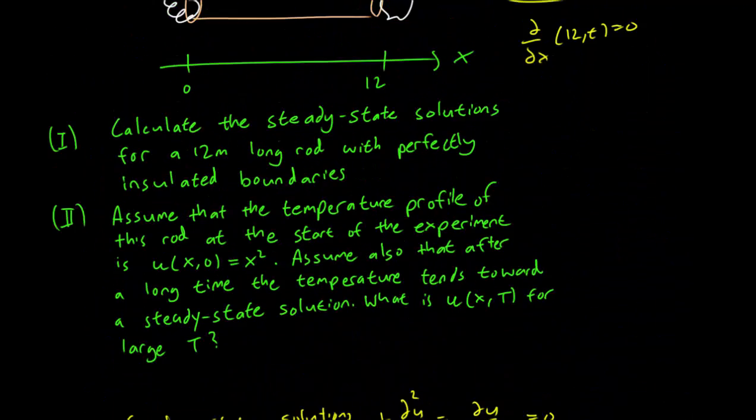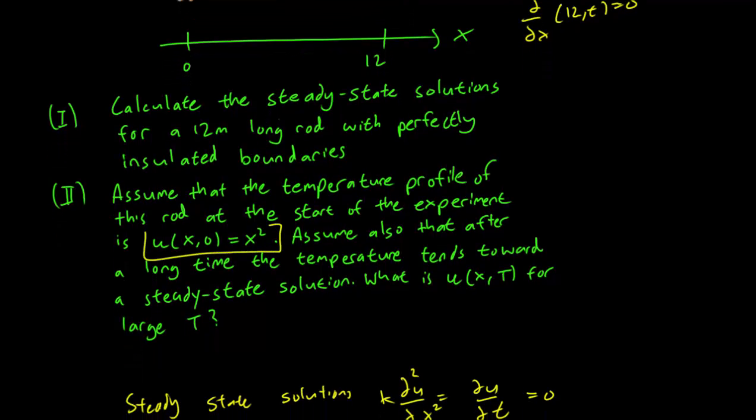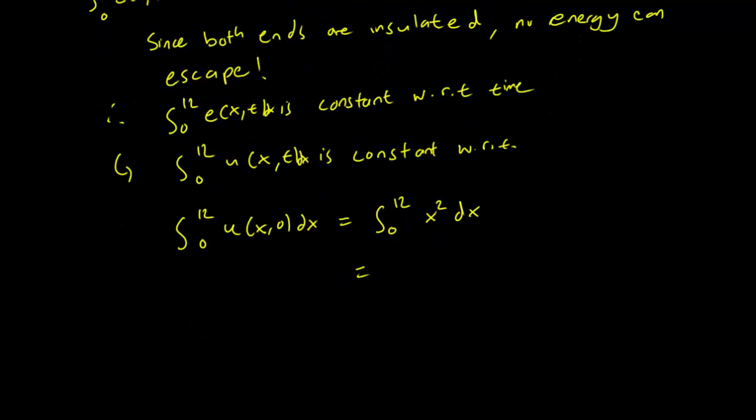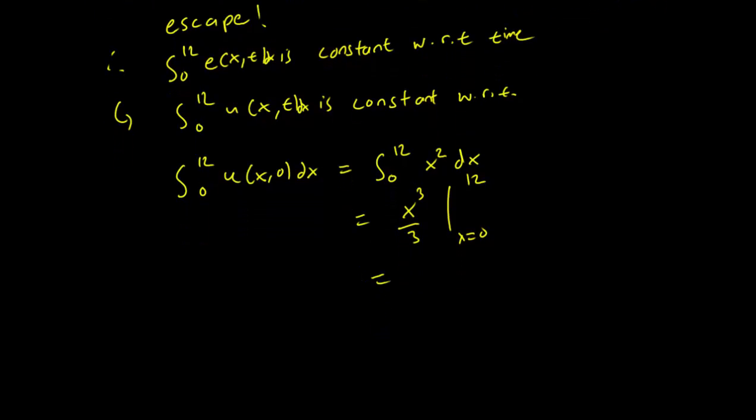So let's think about what that means for us. We know that the temperature at the start of the experiment is x squared. Let's figure that out. So let's do this integral. The integral from 0 to 12 of u of x,0 dx. This is equal to the integral of 0 to 12 x squared dx. We integrate this to get x cubed over 3 going from x equals 0 to 12. And this is just going to be 576. Just plug in 12. 12 cubed is going to be a huge number, but you can calculate that without too much trouble.